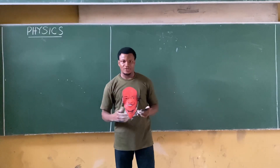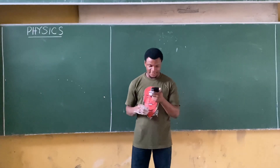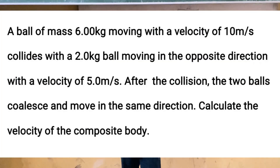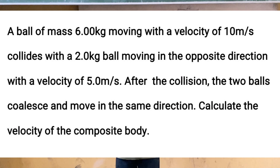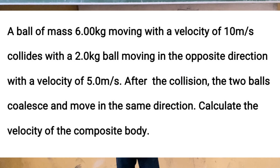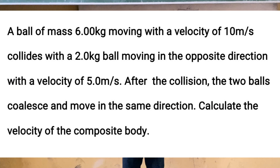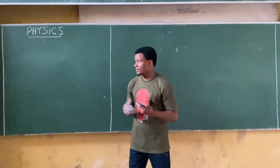Let's look at another question on momentum in physics. The question says: a ball of mass 6.0 kilograms moving with a velocity of 10 meters per second collides with a 20-kilogram ball moving in the opposite direction. After collision, the two balls coalesce and move in the same direction. Calculate the velocity of the composite body.